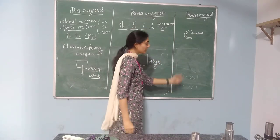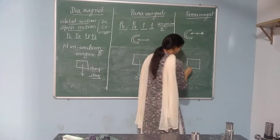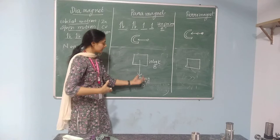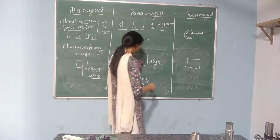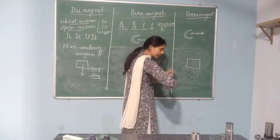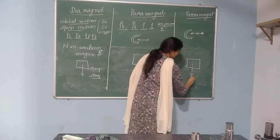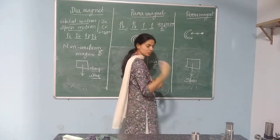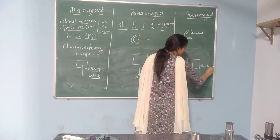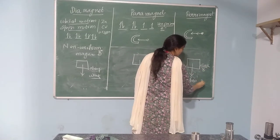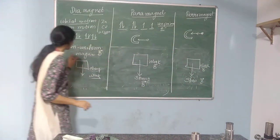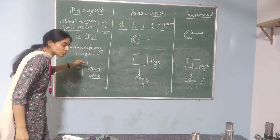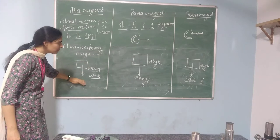For the ferromagnetic material, it will be more strongly attracted towards strong magnetic fields. Wherever the magnetic field value is very high, it will move from weak magnetic field areas to strong magnetic field areas. So whenever a non-uniform magnetic field is applied, diamagnetic goes from strong to weak field, while paramagnetic and ferromagnetic go from weak to strong magnetic field area.